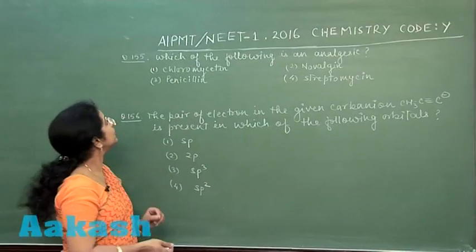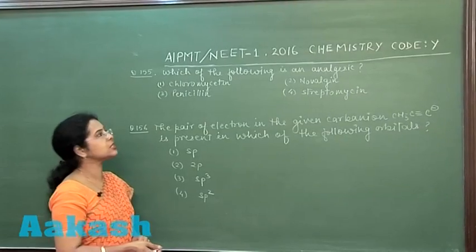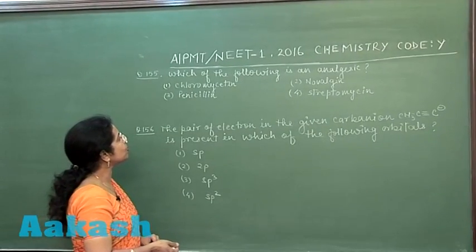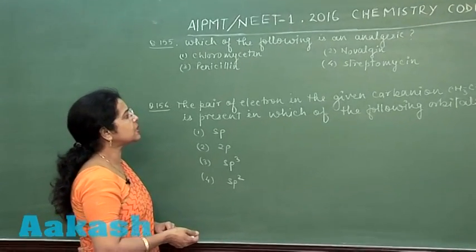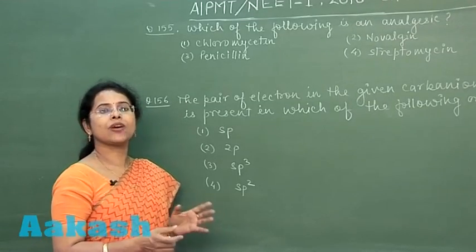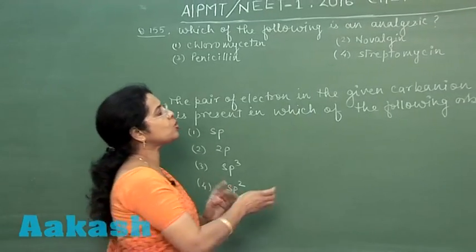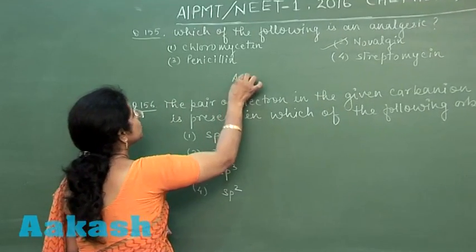Next question is question number 155: which of the following is an analgesic? First option is chloromycetine, second option is noelzine, third option is penicillin, and fourth option is streptomycin. This is a fact-based question. Only noelzine is used as an analgesic, so the answer of this question is 2.